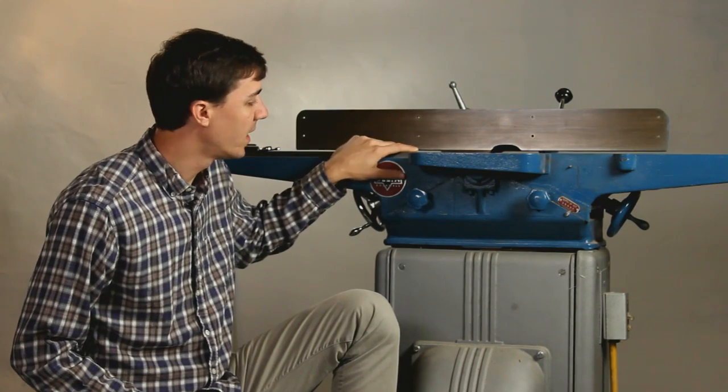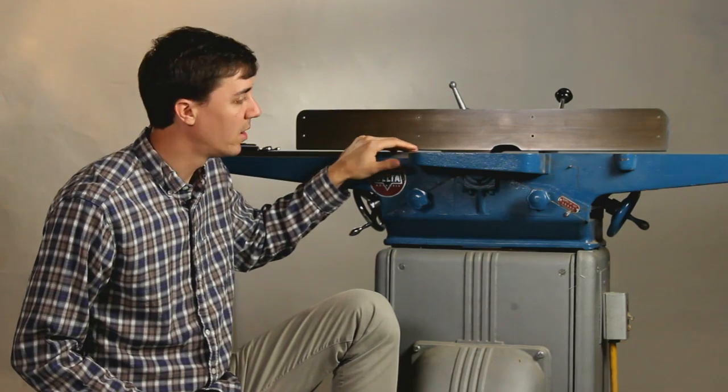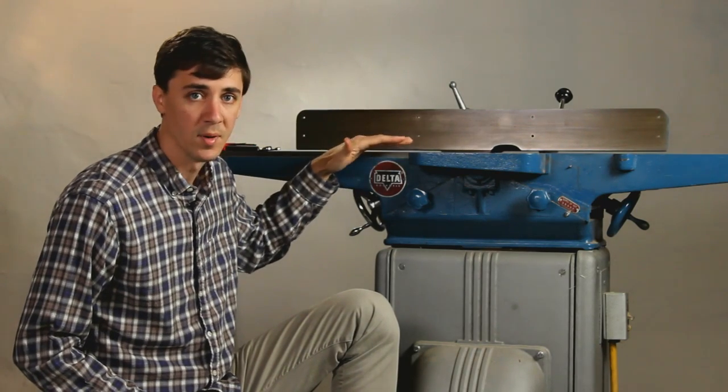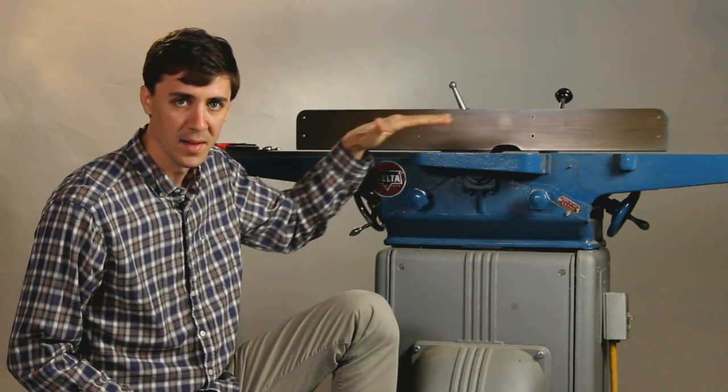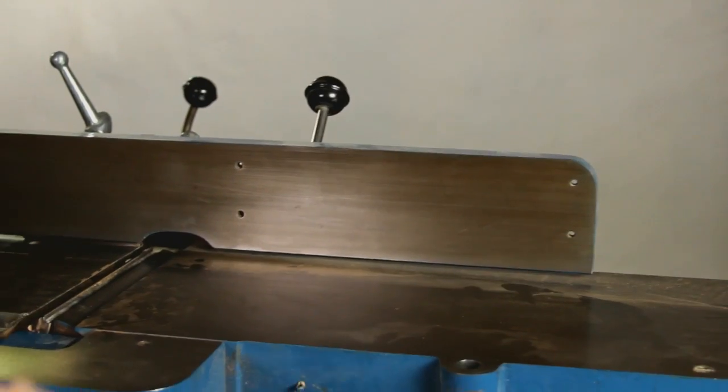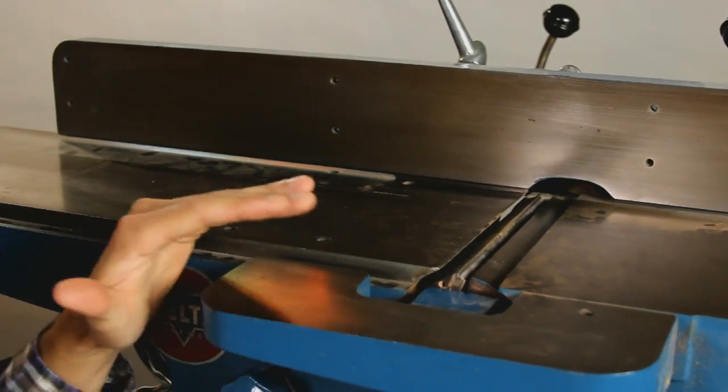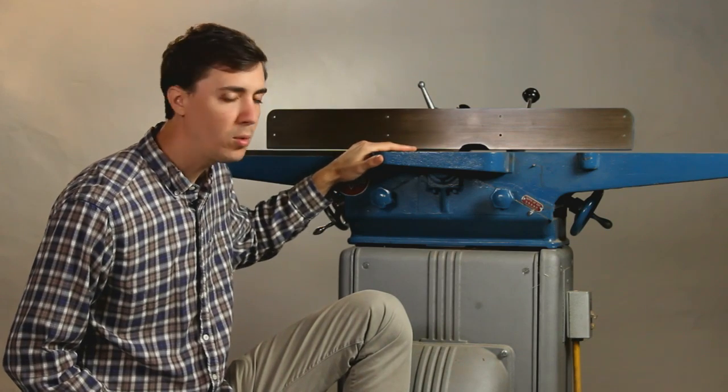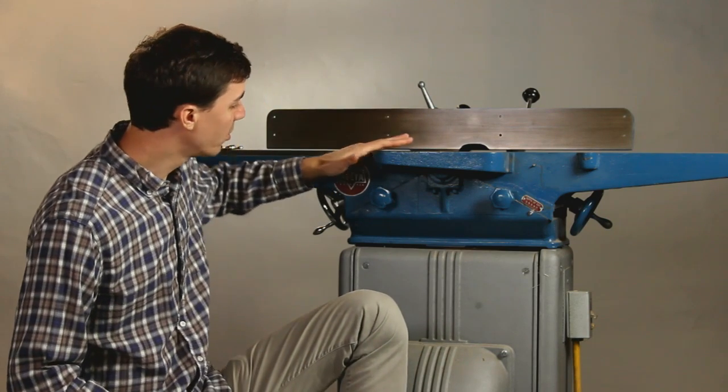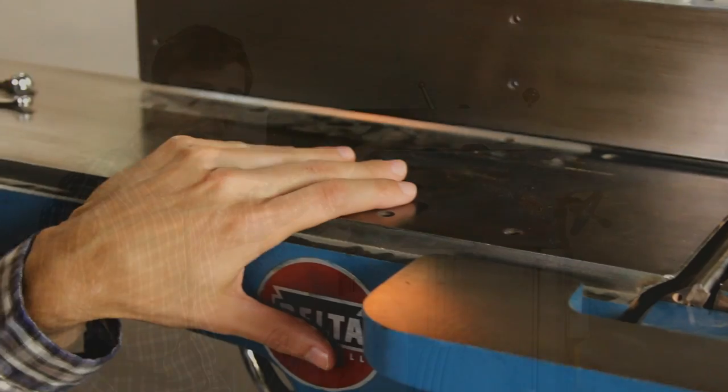A misaligned outfeed table can cause stock that's tapered or with a belly in the middle. The jointer's infeed and outfeed tables need to be coplanar to make a straight cut. An older jointer like this one, it's normal for the outfeed table to sag down a little bit.